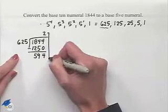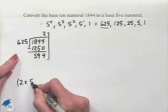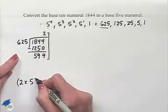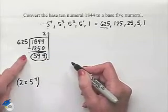This tells us that we're going to end up having 2 times 5 to the 4th power as part of our expansion. Now we're going to deal with our remainder of 594.